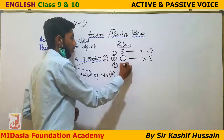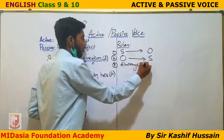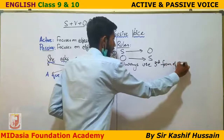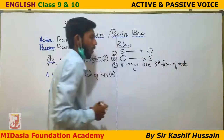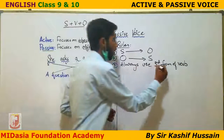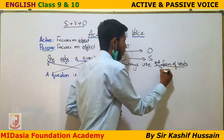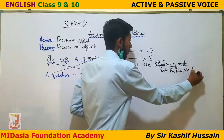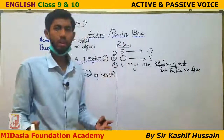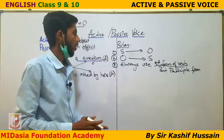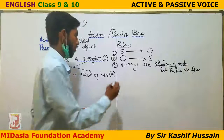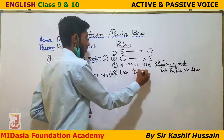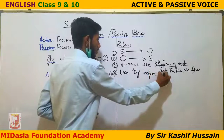Rule number 3: always use the third form of the verb in passive voice. The third form is also called the past participle form — you have to use it in all passive forms. Rule number 4: use 'by' before the object.